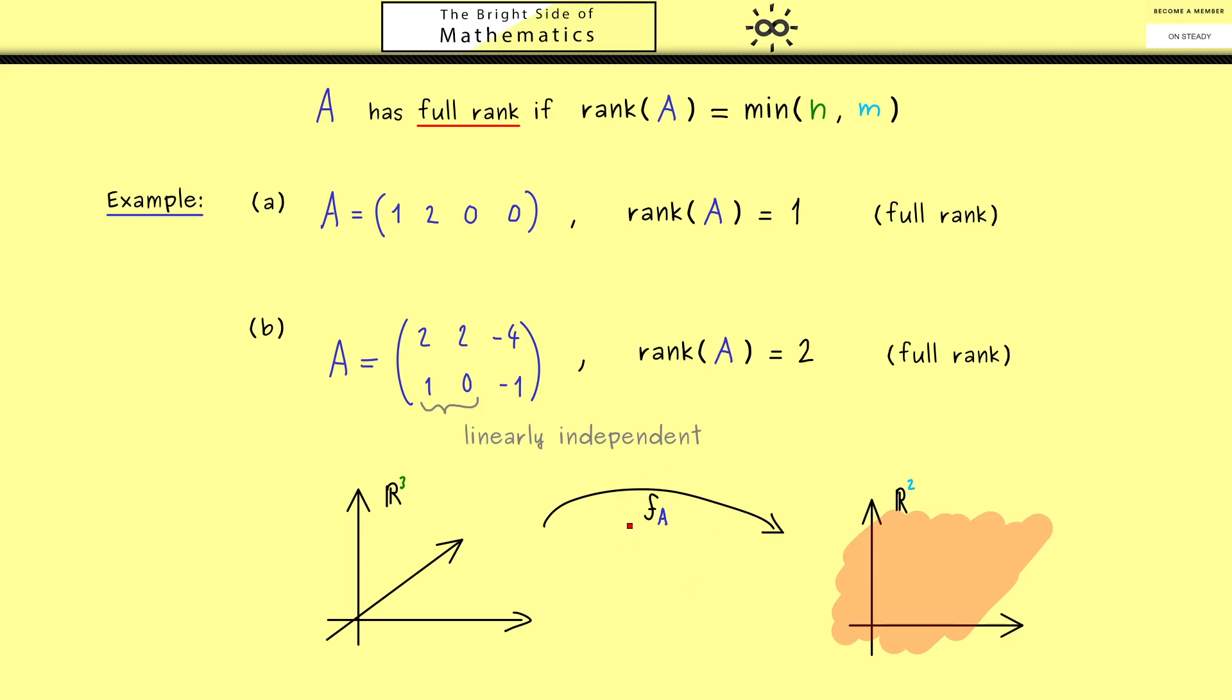So now we know the rank is 2, which means we hit everything here on the right-hand side. So the range of F_A or of A is the whole R^2. However, now if you look at the left-hand side, you see there we have one dimension more. In particular, here we can look at a very special direction, namely the direction given by the vector (1, 1, 1). So let's apply it to our matrix A to see what the outcome is. Of course, this is not a hard calculation. We have column 1 plus column 2 plus column 3. And there you see, this gives us exactly the zero vector.